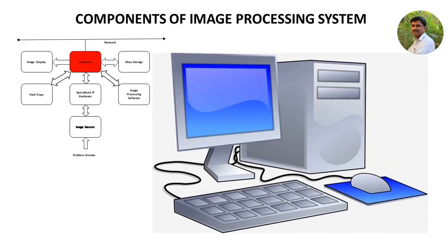The next one is computer or a processor. Usually, the image processing is expressed in algorithmic form, and these algorithms can be implemented either by using general-purpose computers or by using dedicated processors. Normally, general-purpose computers are used in off-time image processing applications and dedicated processors are used in real-time image processing applications where the processing speed is an important criteria.